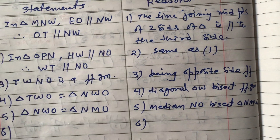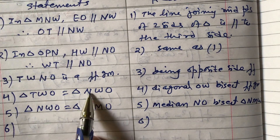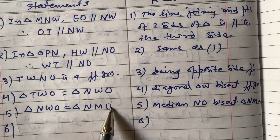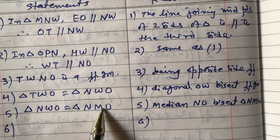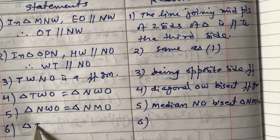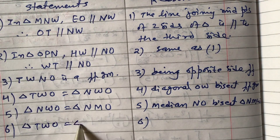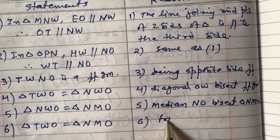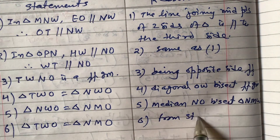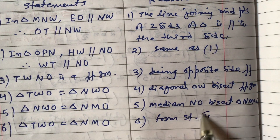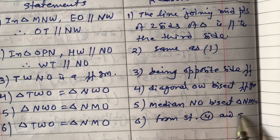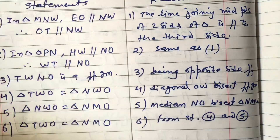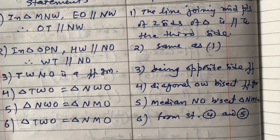Statement 6: From statements 4 and 5 — since triangle TWO equals triangle NWO and triangle NWO equals triangle NMO — we conclude that triangle TWO equals triangle NMO in area.